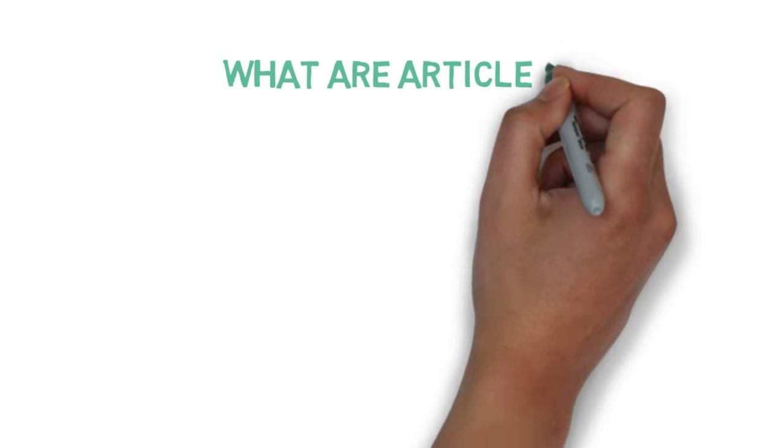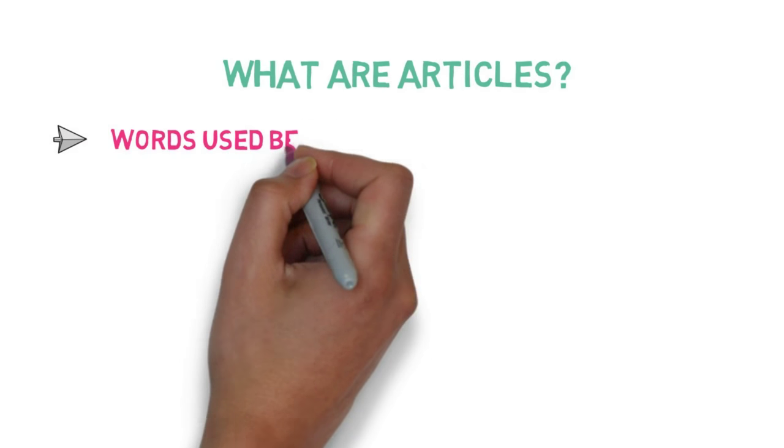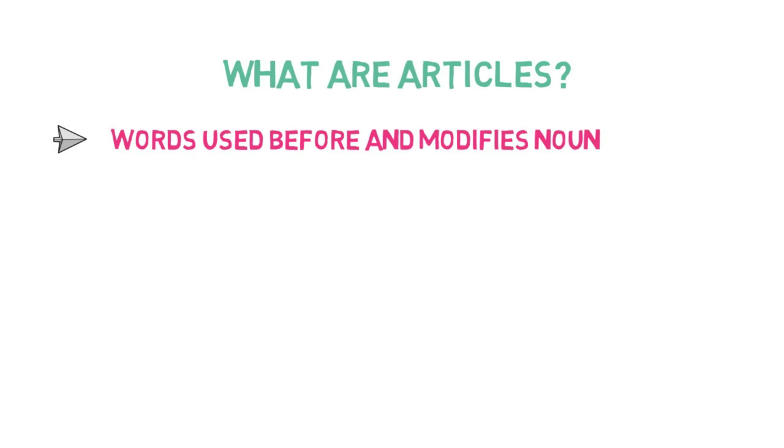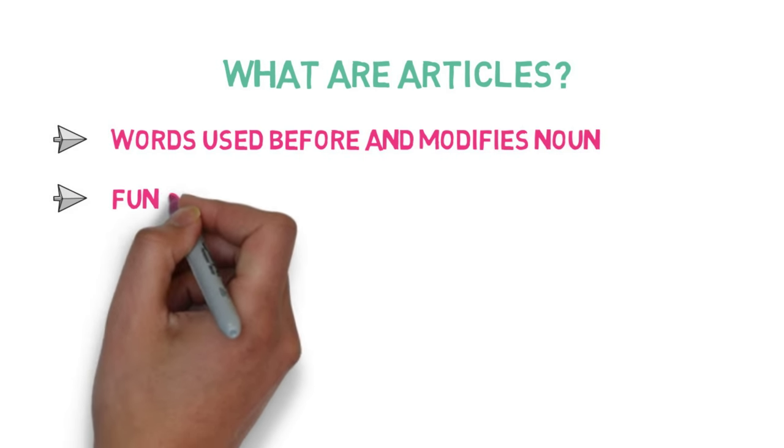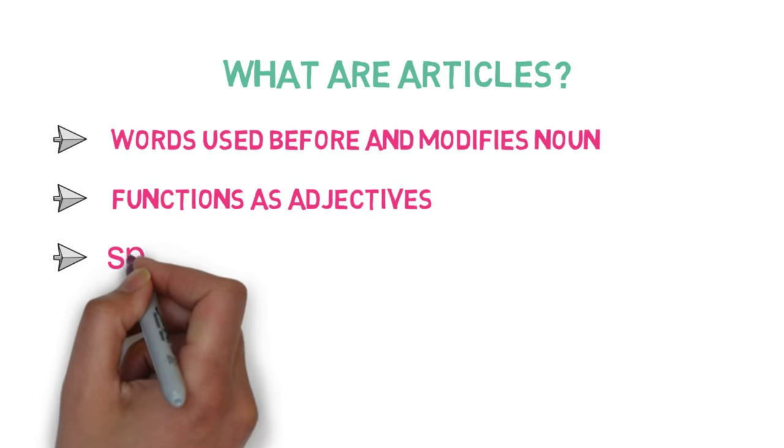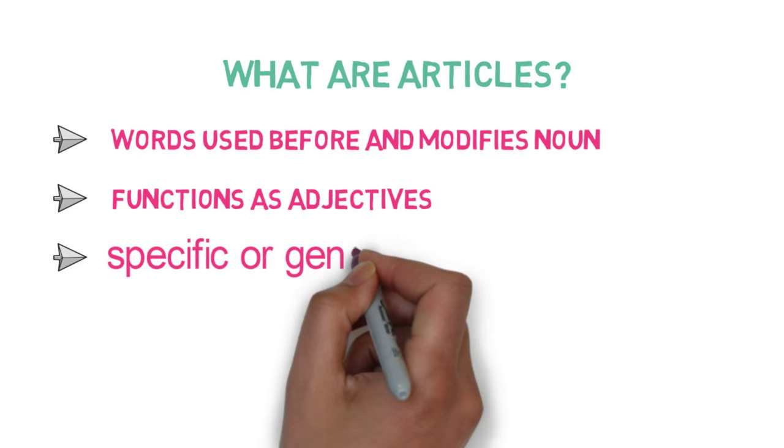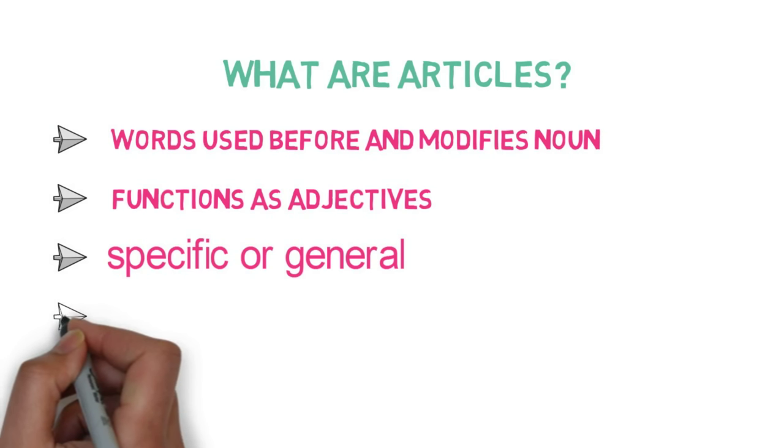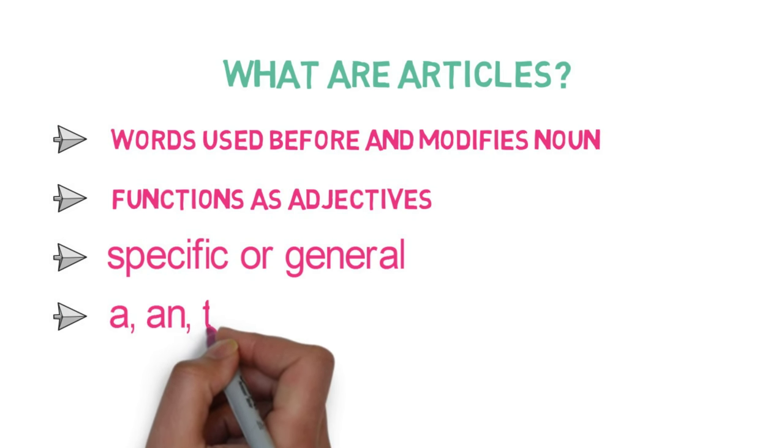So what are articles? Articles are words used before nouns that modify the noun. As they give more information about nouns, they function as adjectives in the sentence. Articles define whether a noun is used in a specific context or general context. There are three articles in English: a, an, and the.